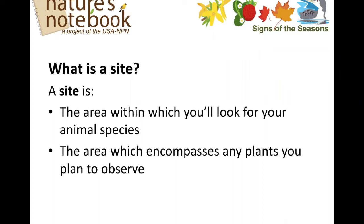A site is the area in which you'll look for your animal species and the area which encompasses any plants that you plan to observe. That's kind of the first step in getting started on observing phenologies: to select at least one site to make observations, though you may choose to observe at several sites.